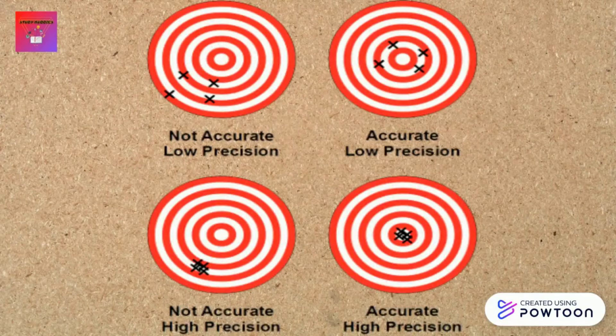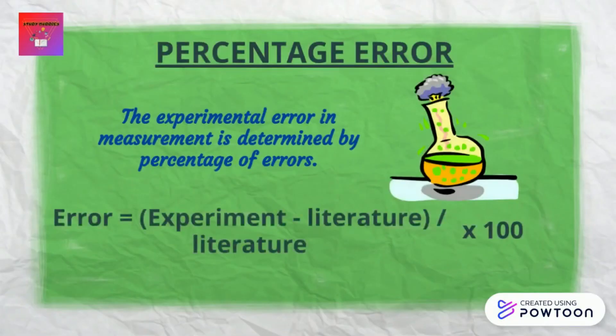Always remember that the lower the standard deviation, the higher the precision. In the bull's eye diagram: the first diagram shows results that are not accurate and not precise; the second shows results that are accurate but less precise; the third shows results that are not accurate but highly precise; and the last diagram shows results that are both accurate and highly precise.